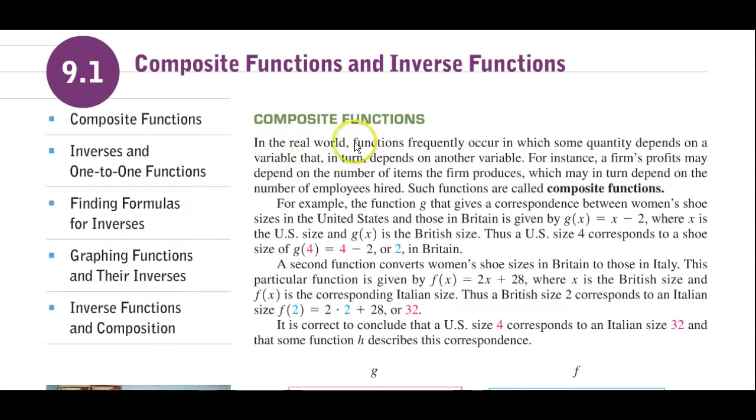In the real world, functions frequently occur in which some quantity depends on a variable that in turn depends on another variable. For instance, a firm's profit may depend on the number of items the firm produces, which may in turn depend on the number of employees hired. Such functions, where one thing is dependent on another, are called composite functions.